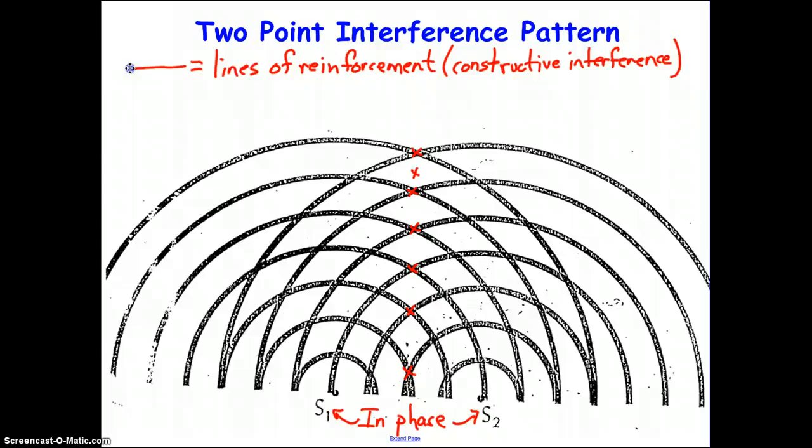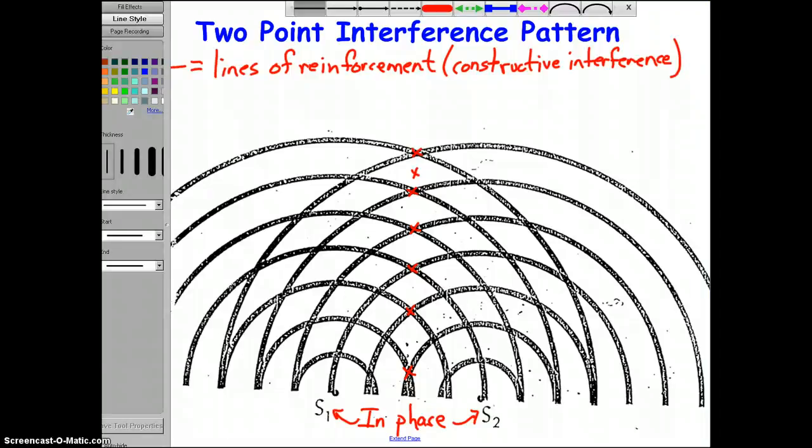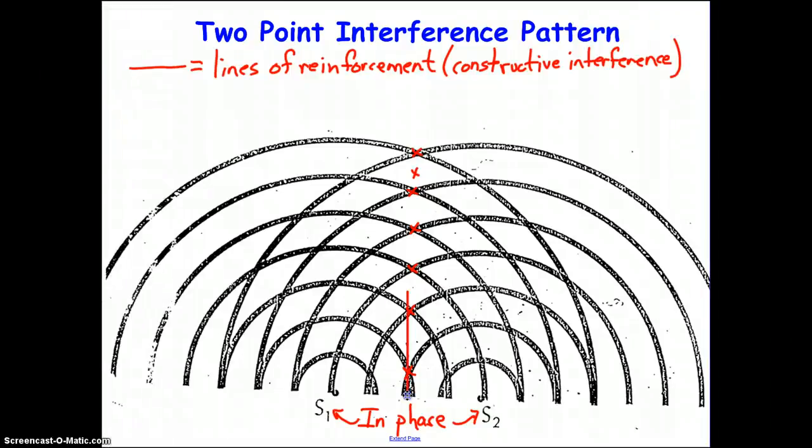So now what we want to do is we want to connect our spots of constructive interference with a smooth line, and obviously for the center, that smooth line is going to be a straight line. So we want to draw that right up through the middle as best we can.